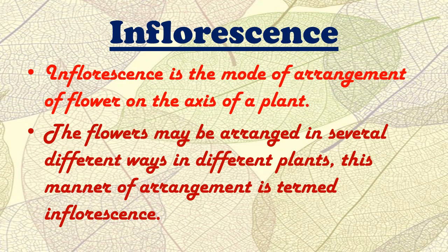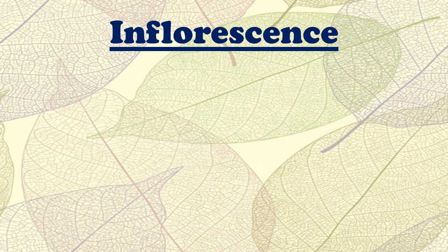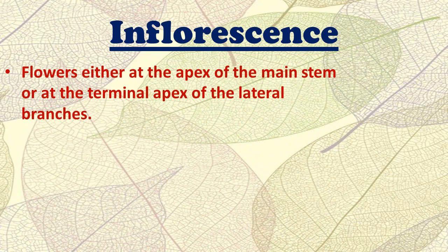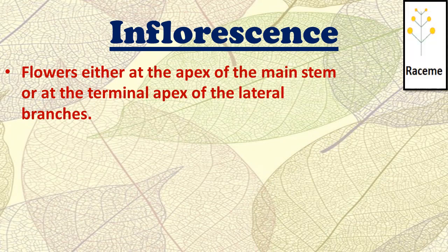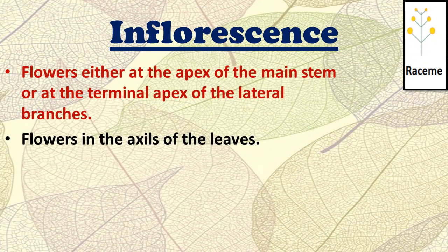Now let's understand the different types of inflorescence — how differently the flowers are arranged on different plants. The first type is one in which flowers are arranged at the apex of the main stem or at the terminal apex of the lateral branches. This type is known as raceme inflorescence.